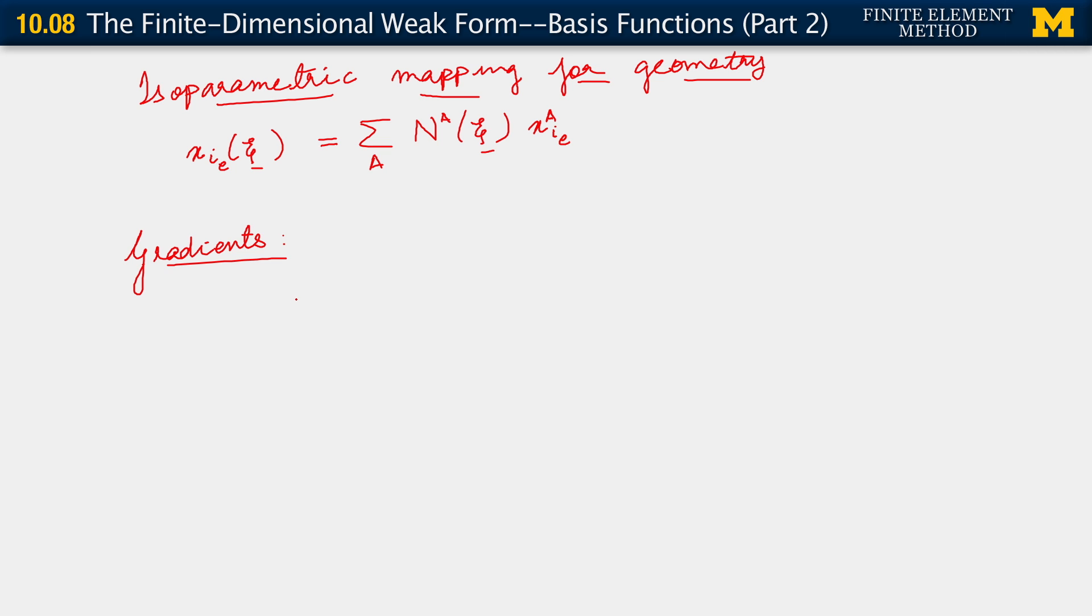What are the gradients we need? When we look back at our finite dimensional weak form we already see that sort of gradient, W^h_{i,j}. And this now over the element is sum over a, N^a_{,j} c^a_i,e. I'll probably add an e in there as well just to keep decorating it.